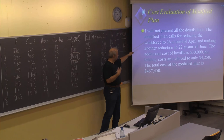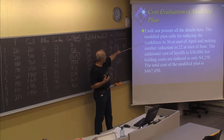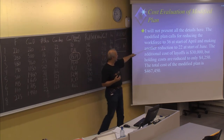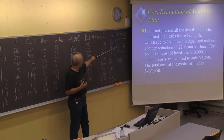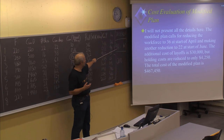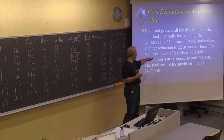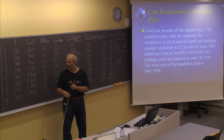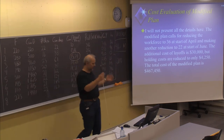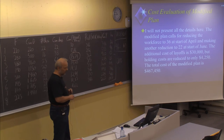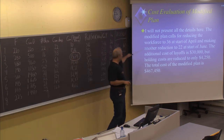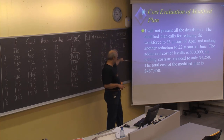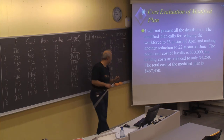The modified strategy reduced the workforce from 46, getting rid of 10 persons in March and reducing again to 22 in June, holding constant production over shorter sub-periods. This reduced the total cost considerably, calculated to be $467,450.